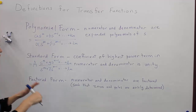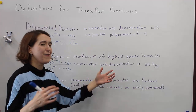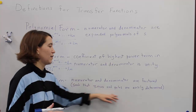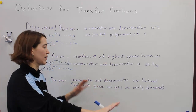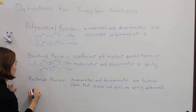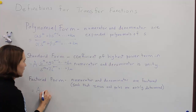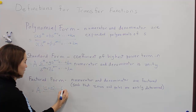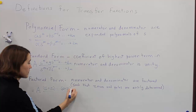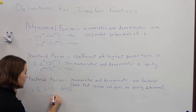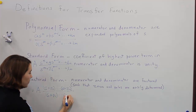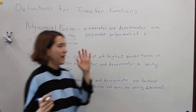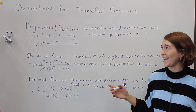The last form is factored form, where the numerator and denominator are factored in terms of S so that zeros and poles are easily determined — useful for our future section on poles and zeros. The general form has a leading coefficient A out front, with numerator written as a product of factors like S plus Z1 multiplied together, and denominator as S plus P1 multiplied by all the other pole factors.